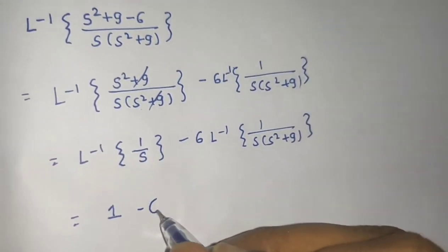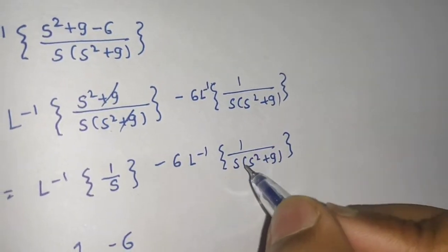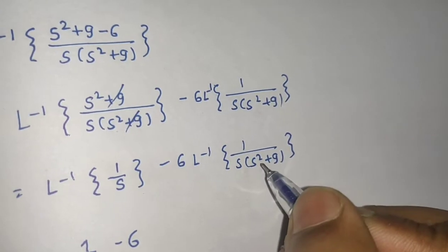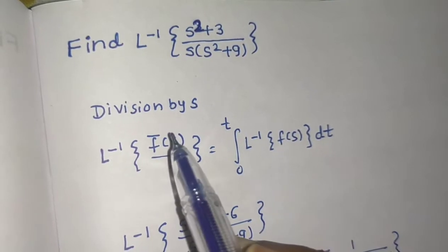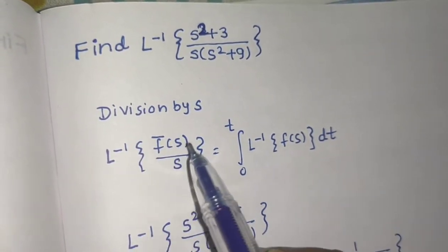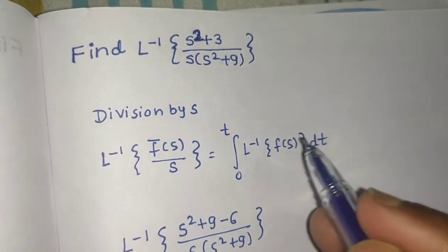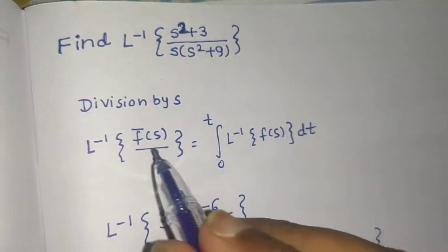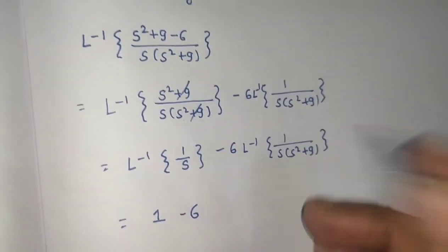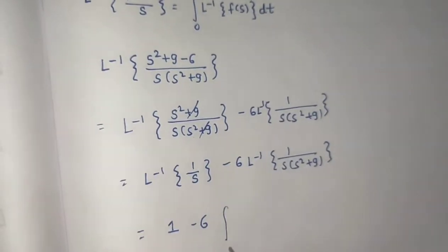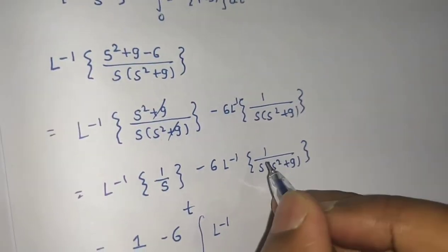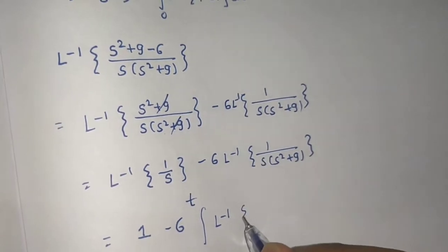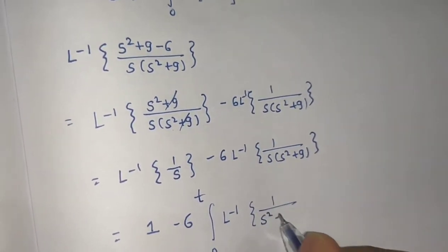Here we can write minus 6 times the Laplace inverse of 1/(s² + a²), which is being divided by s. This fits the division-by-s format, so we can find the inverse Laplace transform easily. We write this as an integral from 0 to t — whatever is left without s, we write that and integrate with respect to t.